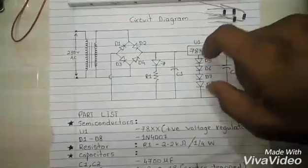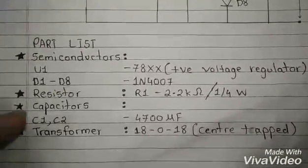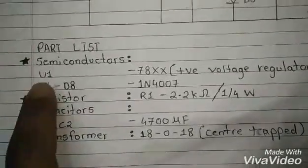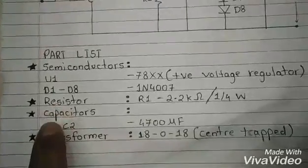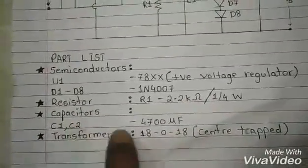Let's see the parts list of our project. We use semiconductors which include the IC, then diodes, then passive components are resistor of value 2.2 kilo ohm quarter watt, capacitors C1 and C2 of 4700 microfarad, and transformer is 18-0-18 center tap transformer.